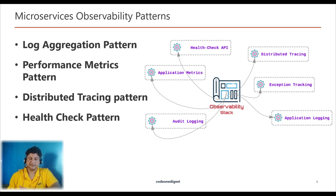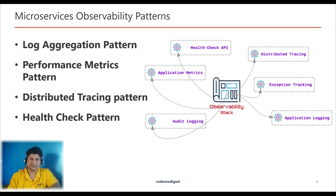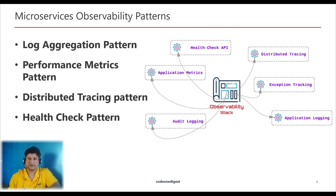There are four design patterns in this category. First, Log Aggregator — a centralized logging service that aggregates logs from each service instance, allowing users to search and analyze logs. Second, Performance Metrics — monitors performance of various microservices, gathering statistics about individual operations and alerting when an issue happens. Third, Distributed Tracing — assigns a trace ID for every incoming request, since requests often span multiple services. Fourth, Health Check — provides an endpoint to check the health of an application or service.